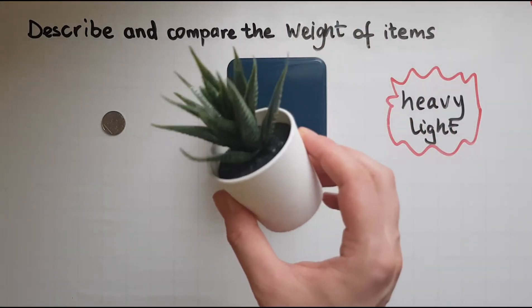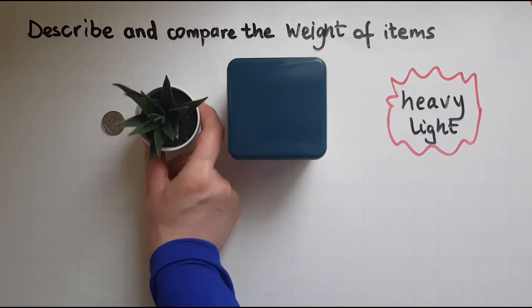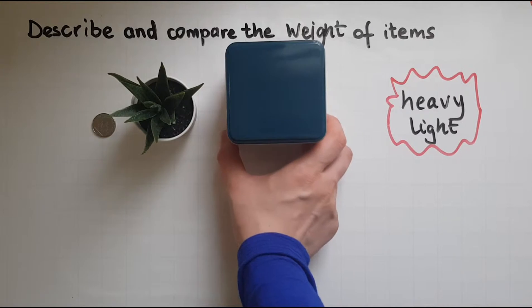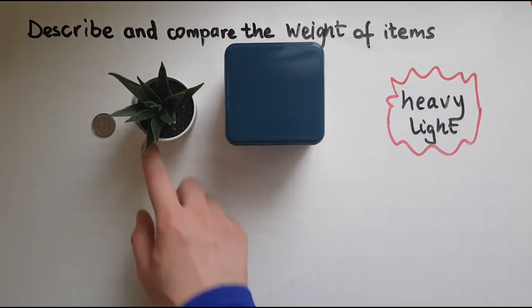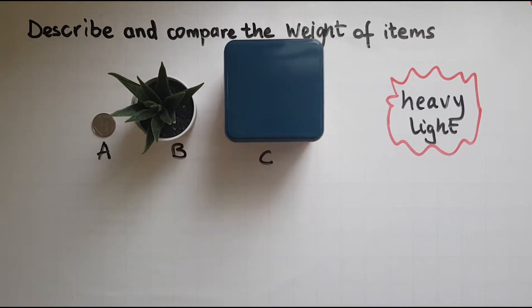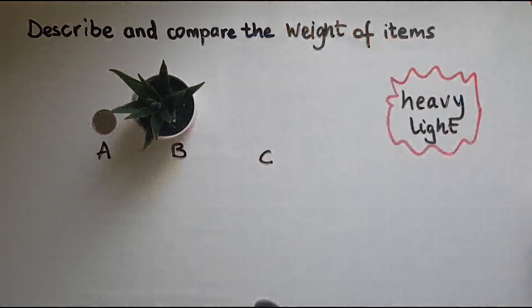So I'm going to add a plastic plant, a decoration one, to help us compare the three items together. So I'll mark them or label them as A, B, and C. So I will try and compare A with B first.